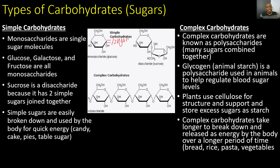Sucrose is a disaccharide because it has two simple sugars joined together — we're literally saying two sugars. If you look at these sugar molecules, you can tell there are two sugar molecules — one and two. Simple sugars are easily broken down and used by the body for quick energy, such as in candy, cakes, pies, and table sugar. This is what gives us that sugar rush or quick energy rush, because these molecules are so easy to break down and use as ready energy for the body.